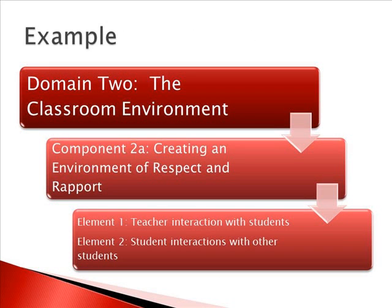Here's an example of how the domains are broken into components and then further into elements. This is a specific example from domain two, the classroom environment. The first component — creating an environment of respect and rapport — is further broken down into two elements: teacher interaction with students, and student interactions with other students. Some components have up to six or seven elements and some have as few as two, breaking each domain into smaller chunks so the teacher can more effectively address what makes up that domain.